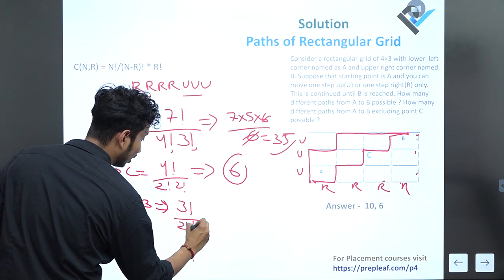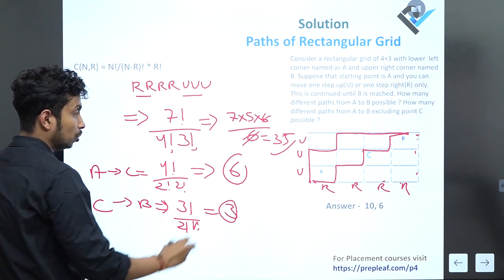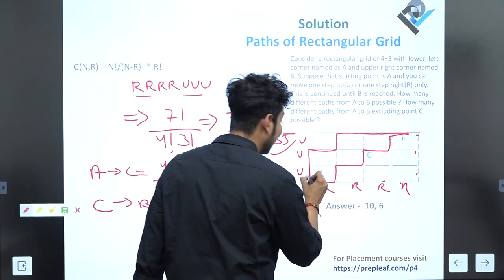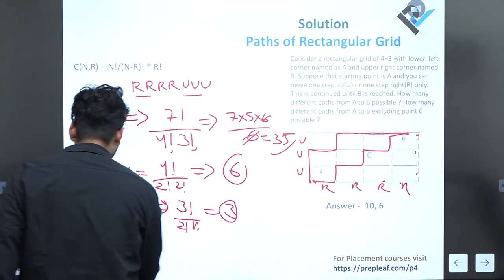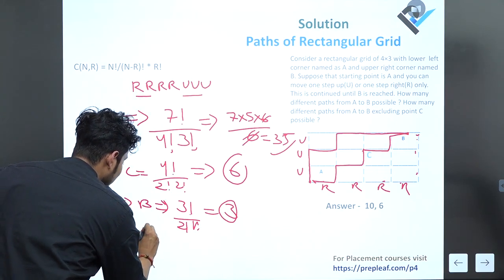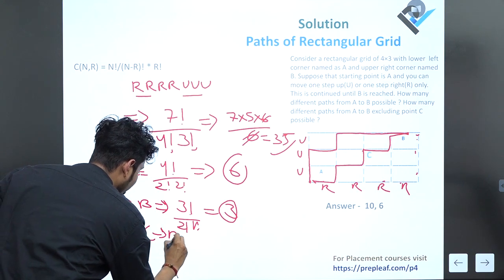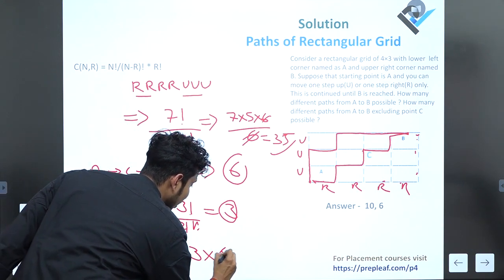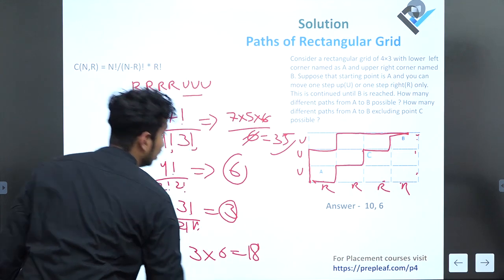Now let's find out total number of ways from reaching point C to point B. Total 3: 2 right and 1 up. 3! / (2! × 1!) = 3. So total number of ways reaching A to B with C will be A to C multiply by C to B, which equals 3 × 6 = 18.